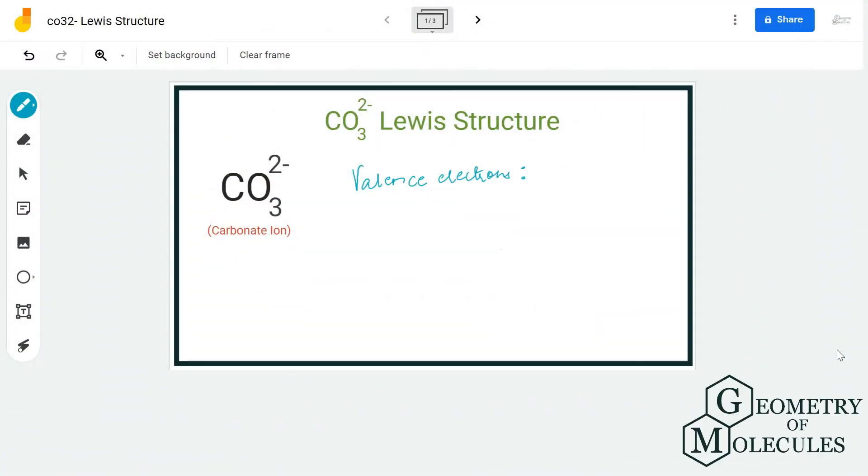Hi guys, today in this video we are going to look at the Lewis structure for carbonate ion. It has a chemical formula of CO3 2-. The 2- indicates a negative charge that this molecule has because of accepting two valence electrons.